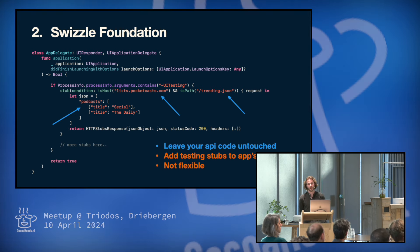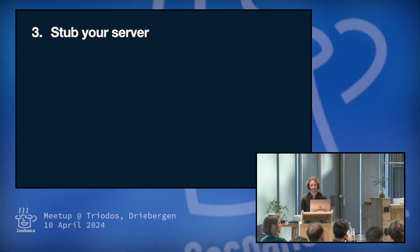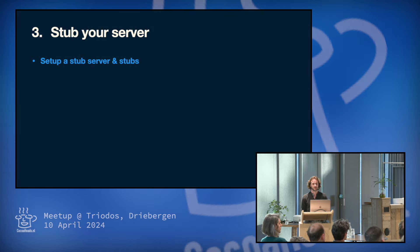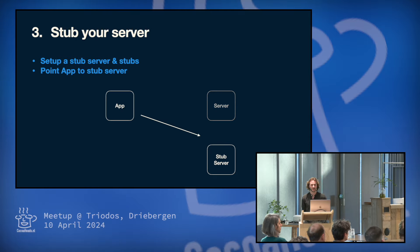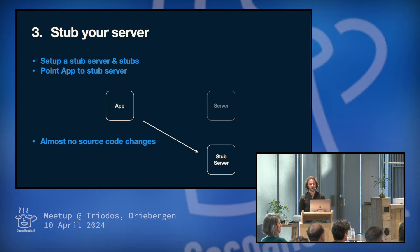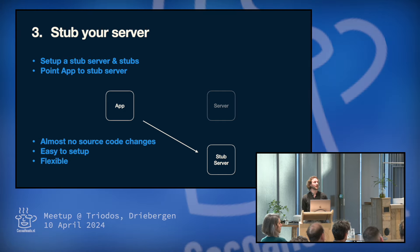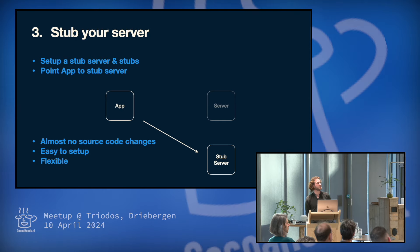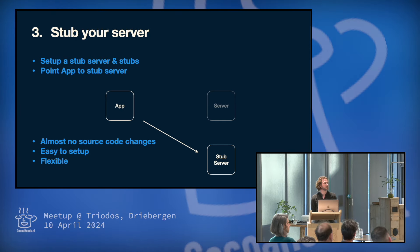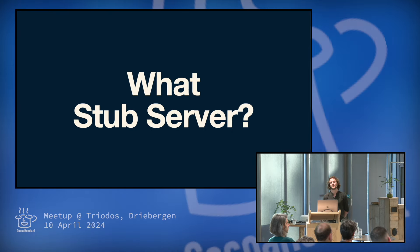So I think there's one other interesting option and that is to stub away the server. So we set up a stub server and we set up all the stubs that we want the server to use. And then we point our app to that server instead of the real server. And the cool thing is that it almost needs no changes to our source code. I think it's pretty easy to set up as well. And it's really flexible because in our test runner we can create the server and we can reuse it for every different test. But then what stub server should we use?